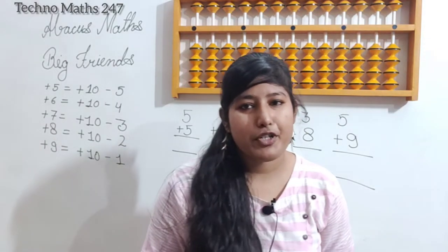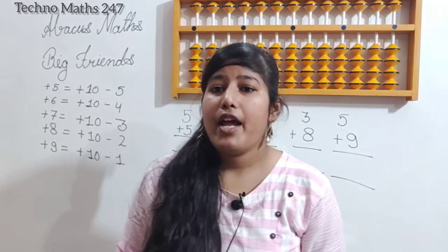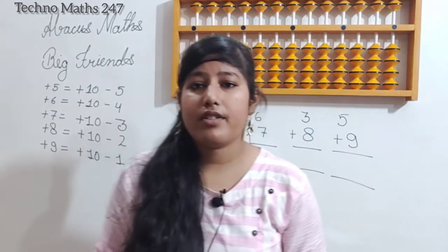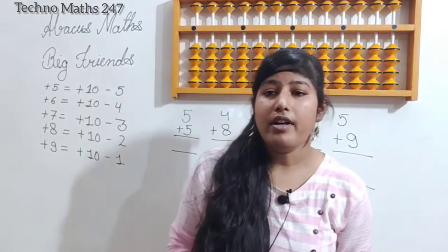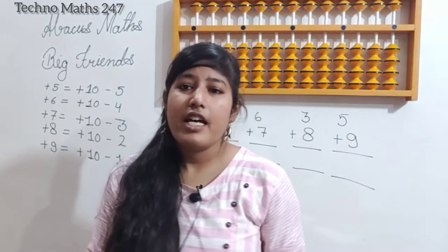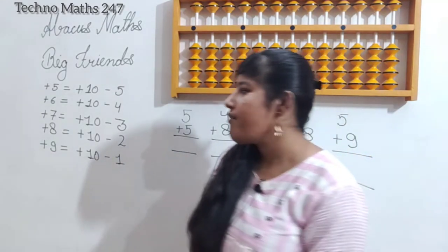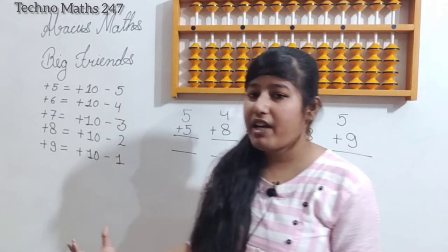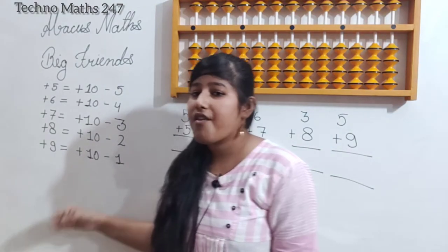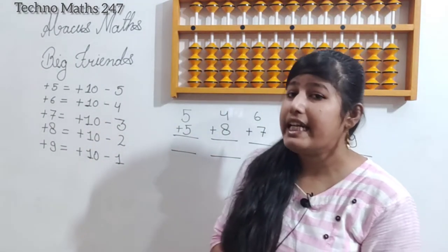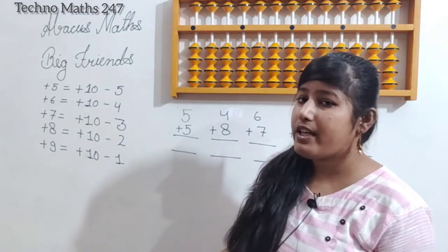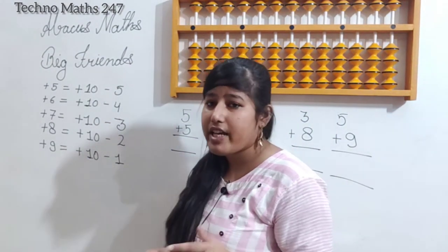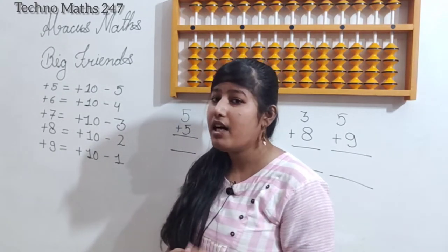Hello guys, I welcome you all to our YouTube channel Technomachs 24x7. Today we are going to study big friends. We have studied small friends in our previous videos, and now we are going to learn about big friends. It is very similar to small friends — we just have to change one digit: instead of 5, we now use 10. Big friends are used just for completing the calculation, the same way we used small friends.